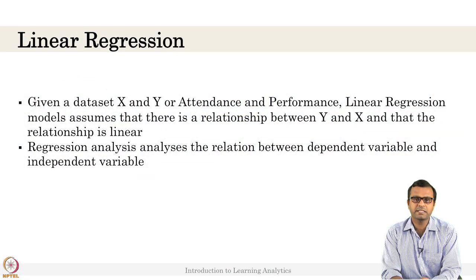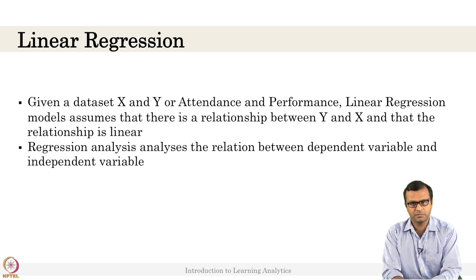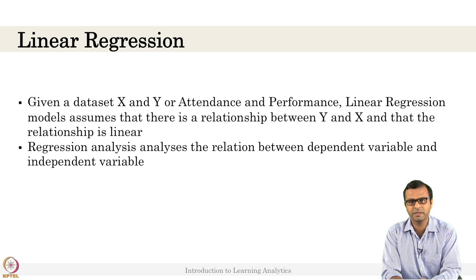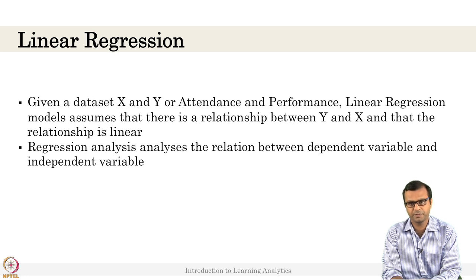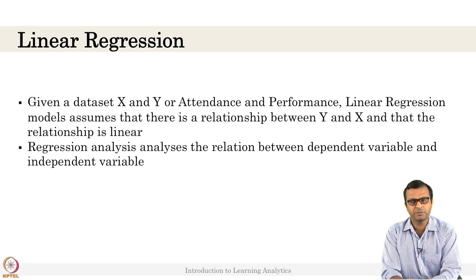Consider a dataset X and Y, where X can be attendance and Y can be performance. We want to predict students' performance from the attendance. If we have a single independent variable — here attendance is the independent variable — and performance is the dependent variable, because performance depends on other variables. The performance might change based on other variables, so performance is also called the target variable. We need to come up with a linear regression model and identify the relationship between these two variables.